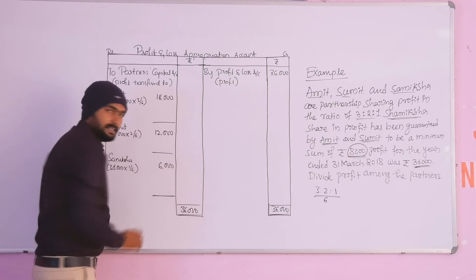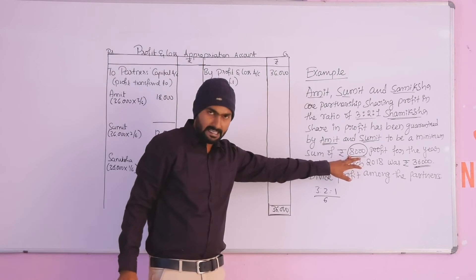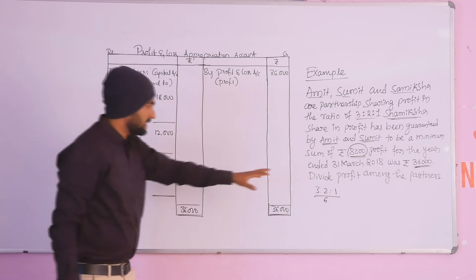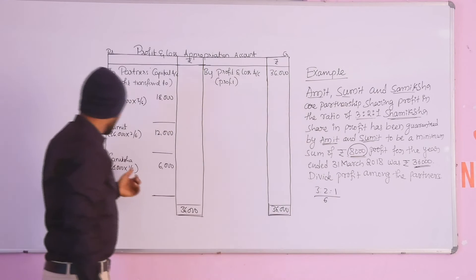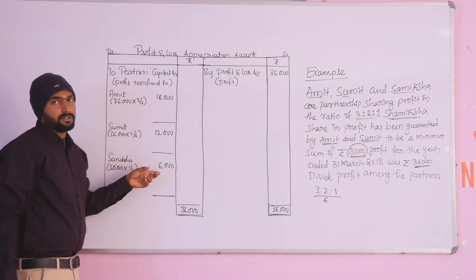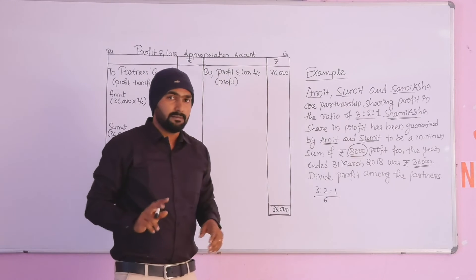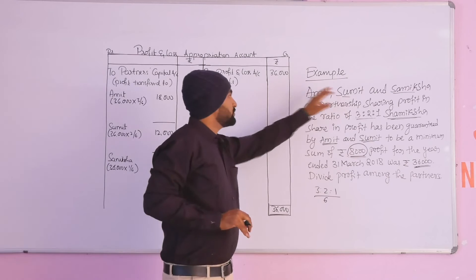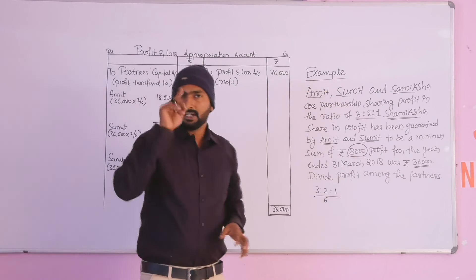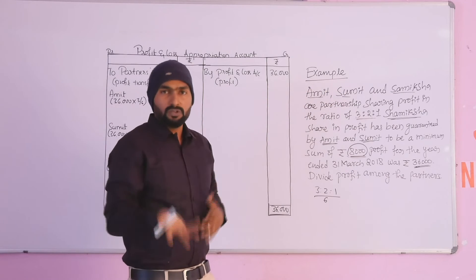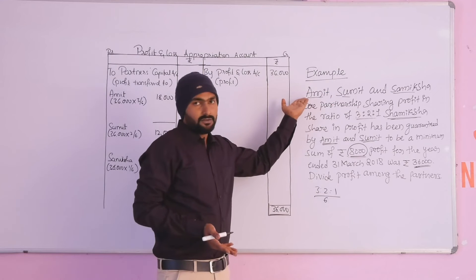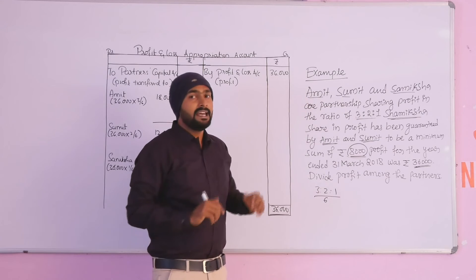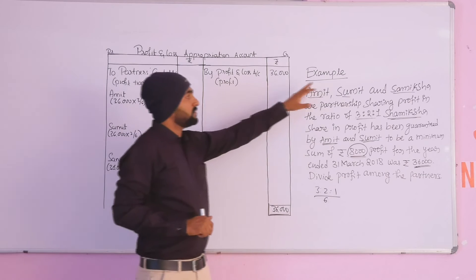The difference: Samiksha received 6,000, but the guarantee amount is 8,000. So the deficit is 2,000. This amount of 2,000 is not agreed to be borne by Samiksha — it must be recovered. Amit and Sumit have given the guarantee. The deficit of 2,000 must be recovered from them. Sometimes a guarantee is given by one partner or more than one partner.